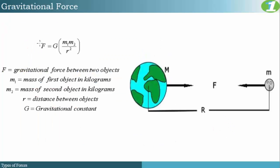The formula for gravitational force is: gravitational force equals the gravitational constant times mass one multiplied by mass two, divided by r squared, where r squared is the distance between the masses. For example, comparing the earth and the moon, r represents the distance between the center of the earth and the center of the moon, and we would have a gravitational force between them determined by mass one and mass two.